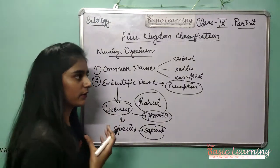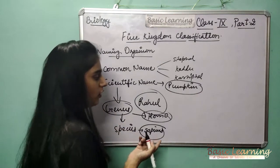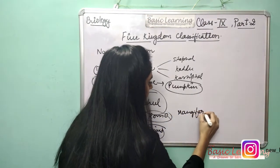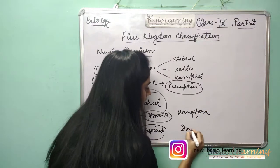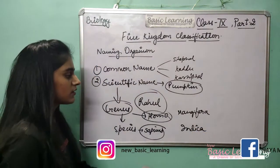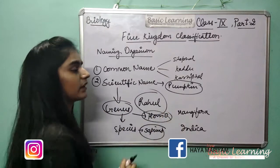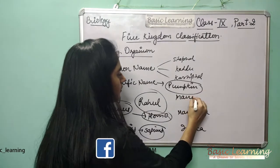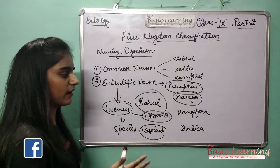Now one example about mango. What is the genus of mango? Mangifera. And what is the species of mango? Indica. So the full scientific name of mango is Mangifera indica.